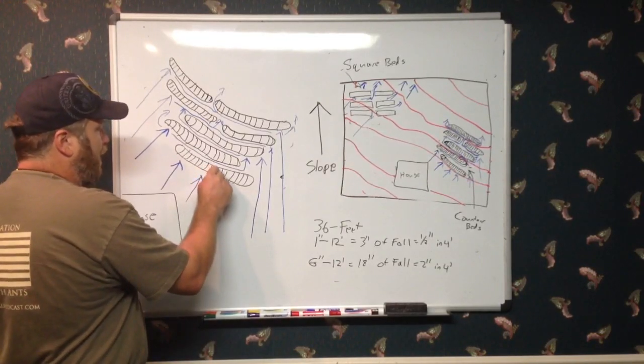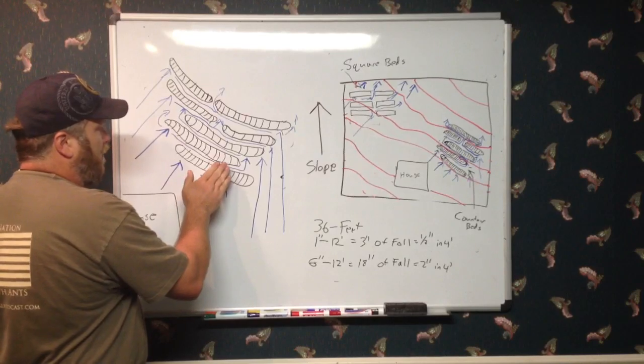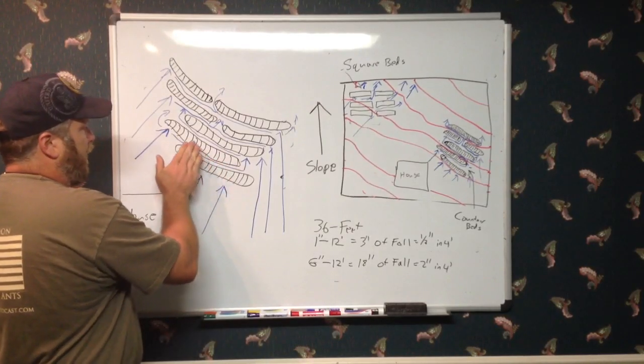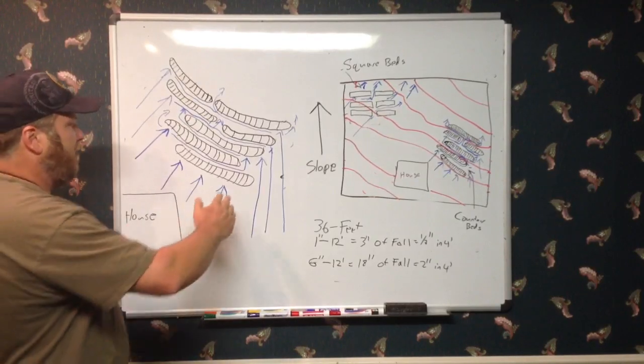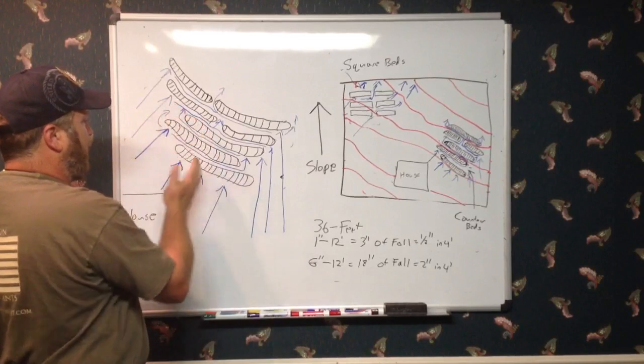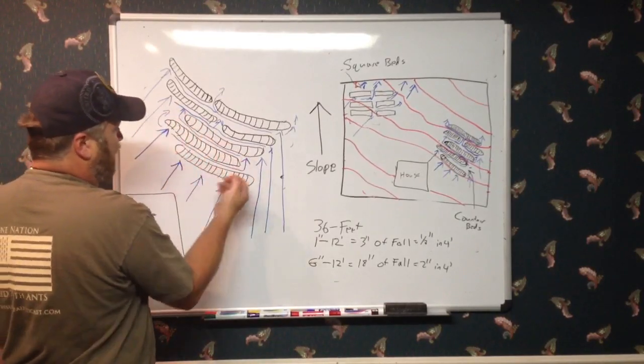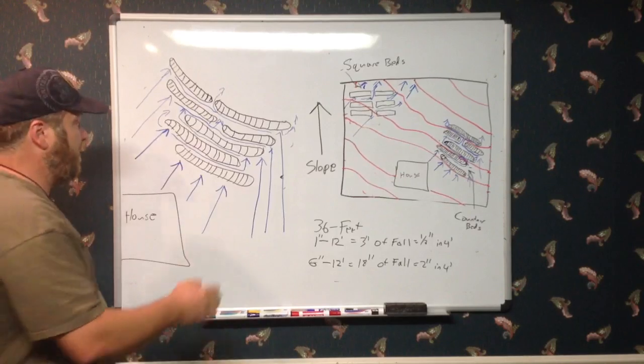So this spot right there at the bottom of this bed would only be 2 inches higher than there. That's enough for the water to run, but it's also going to slowly fill back up. We get much more than that, we've got to get a little bit creative when we put our paths in. Maybe we're going to do more of a leveling of the paths off. Come here and scrape these down so that the paths themselves are level.